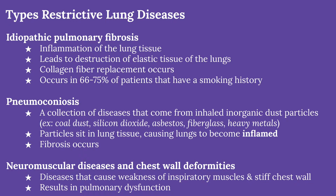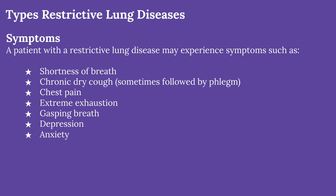Neuromuscular diseases and chest wall deformities aren't technically lung diseases, but they do cause stiffness of the chest and weakness of the inspiratory muscles. Patients with restrictive lung diseases can experience symptoms such as shortness of breath, dry cough sometimes with phlegm, chest pain, feeling extremely tired, gasping breath, depression, or anxiety.